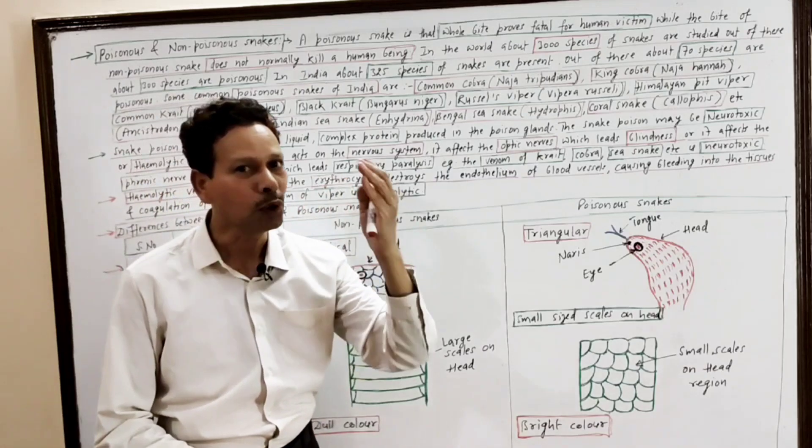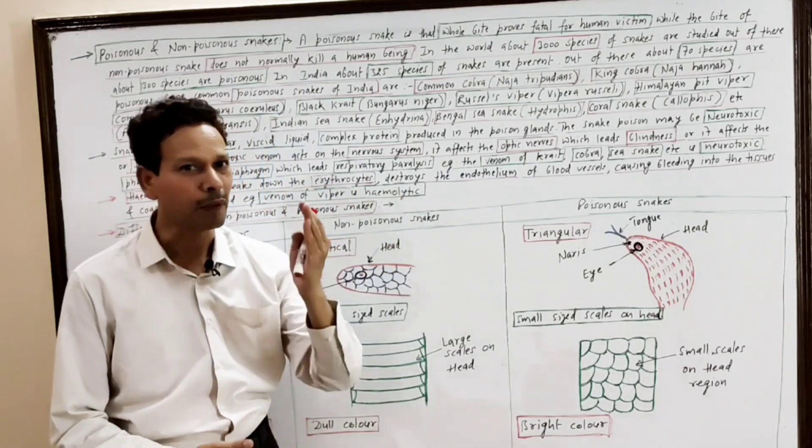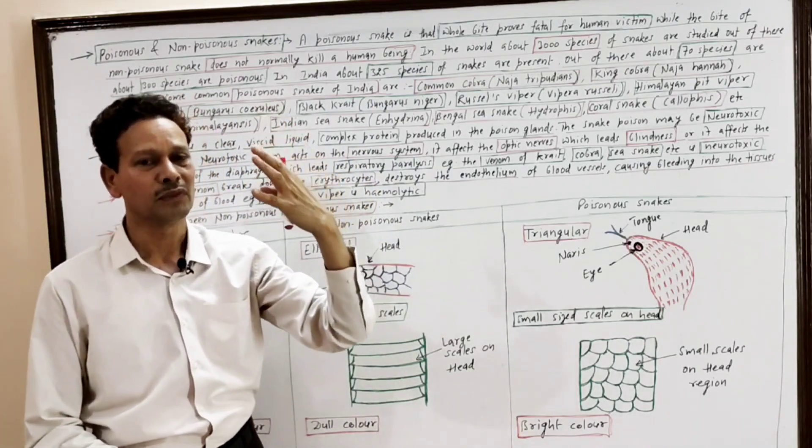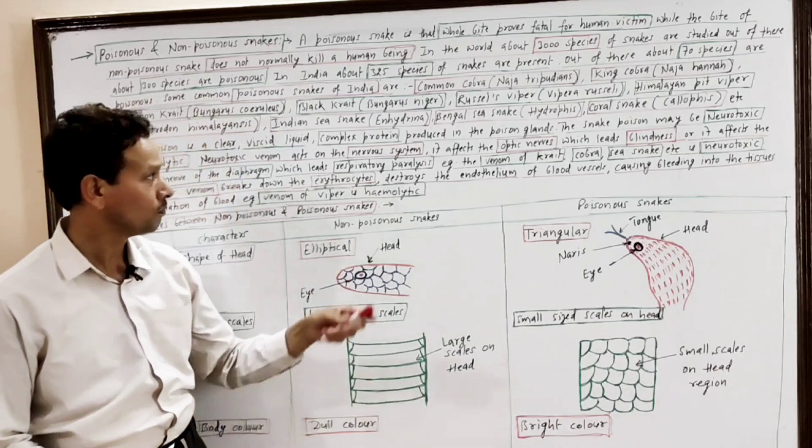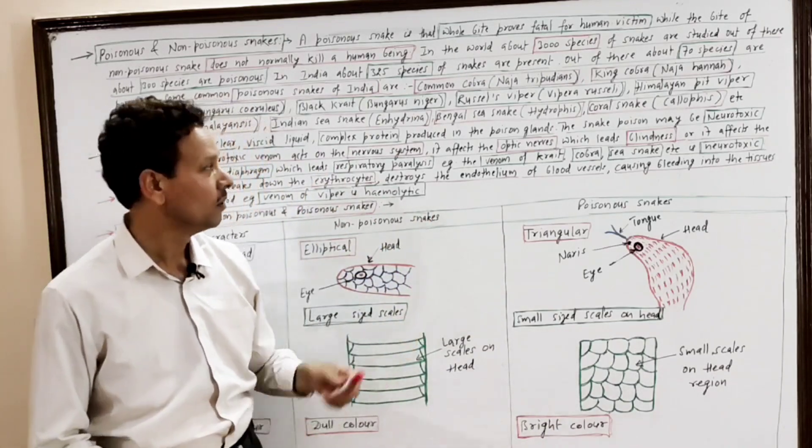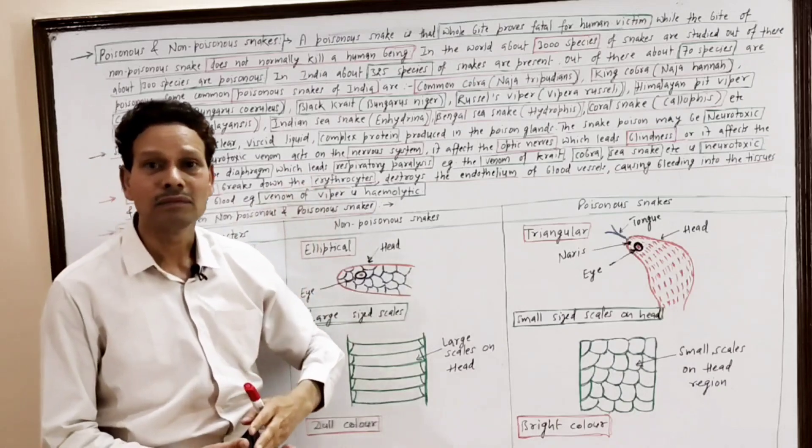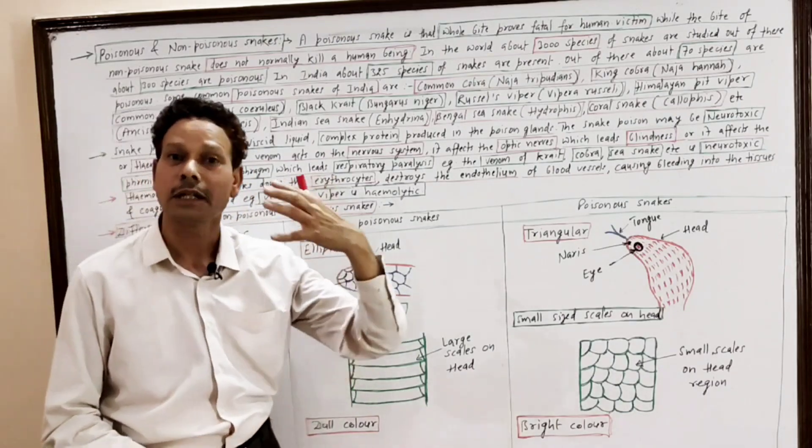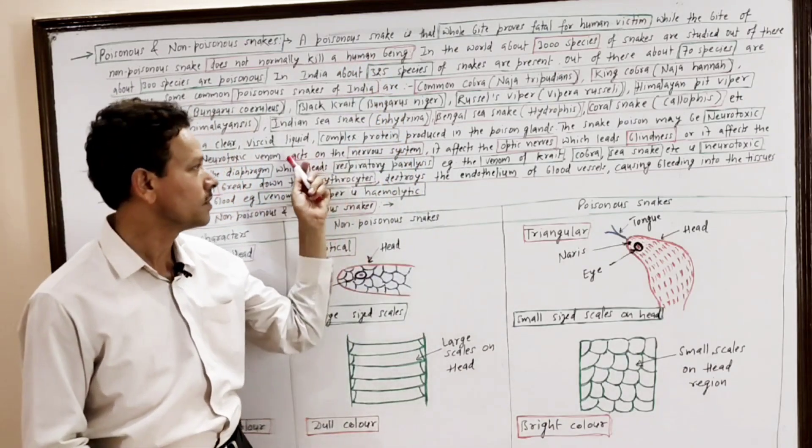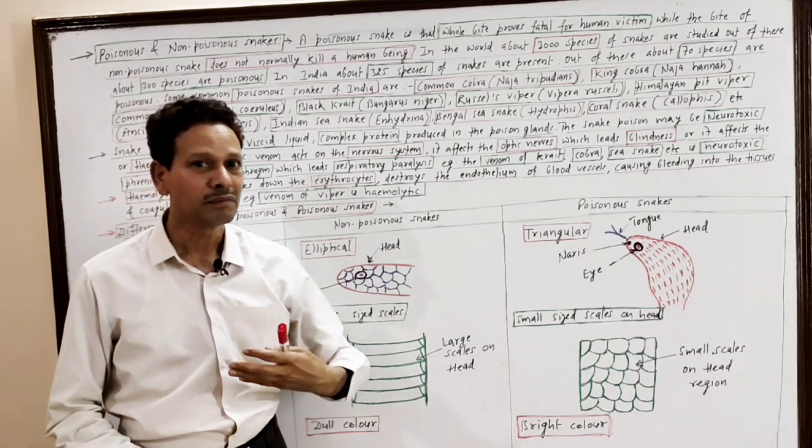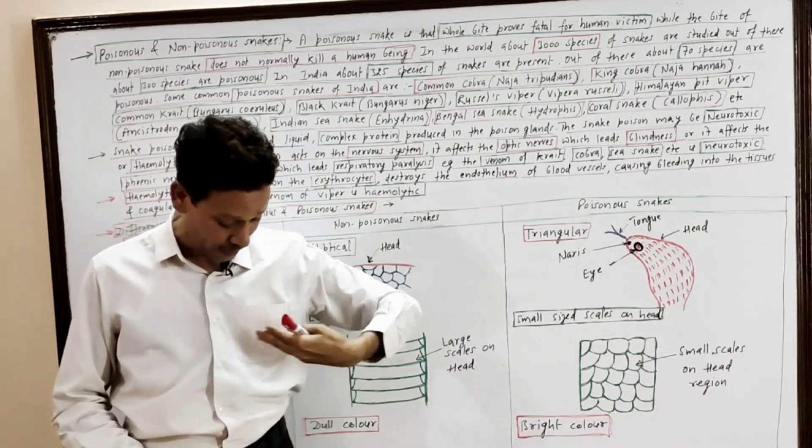Note down neurotoxic. It means the poison or venom acts upon the nervous system, leading to blindness as it affects the optic nerves, the nerves of the eyes. This neurotoxic venom also affects our diaphragm muscles.